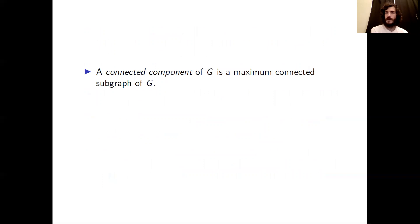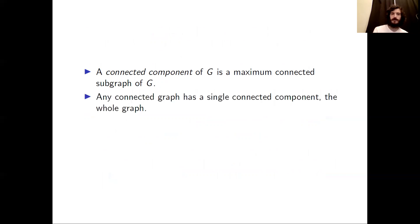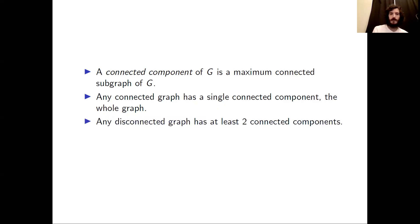Another special type of subgraph is a connected component. A connected component of G is a maximum connected subgraph of G. If G is connected, it has only a single connected component — the whole graph G itself. If G is disconnected, it will have at least two connected components.